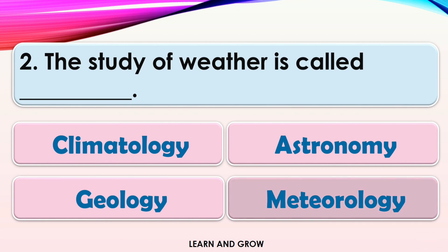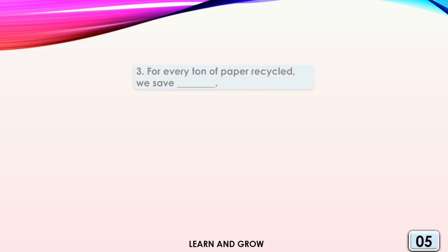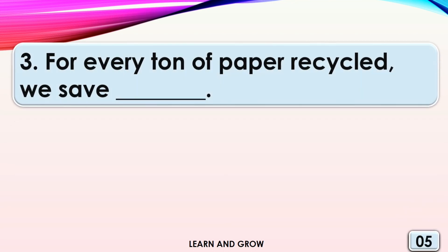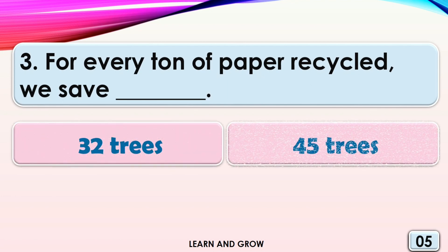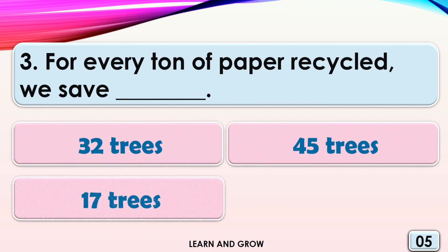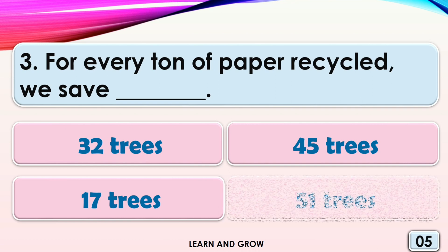The answer is Meteorology. For every tonne of paper recycled, we save: option A, 32 trees; option B, 45 trees; option C, 17 trees; or option D, 51 trees.